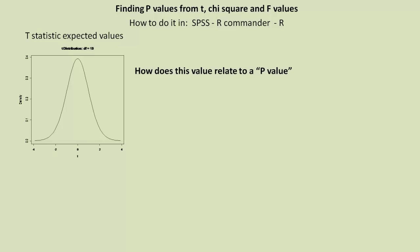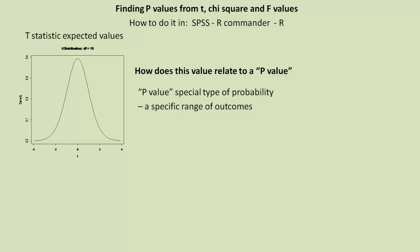How do these t-values relate to a p-value? The p-value is a special type of probability — p stands for p-value, a particular type of probability talking about a range of values. A p-value also relates to a specific statistic; in this instance it relates to a t-statistic, but it can relate to other statistics such as chi-square or an f-statistic.